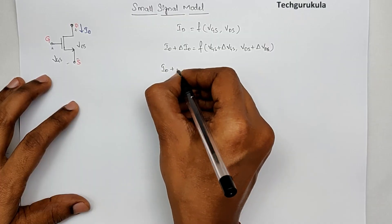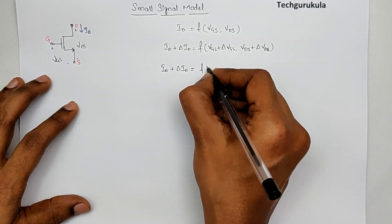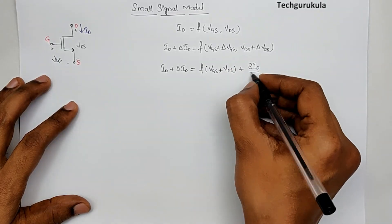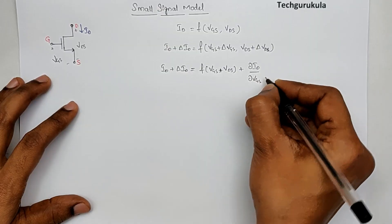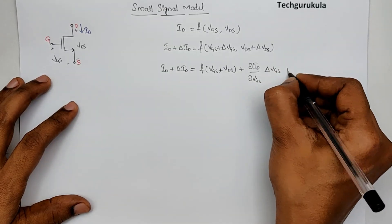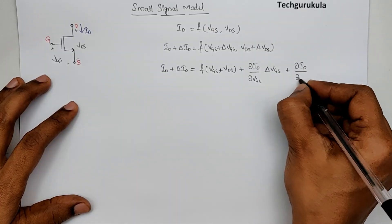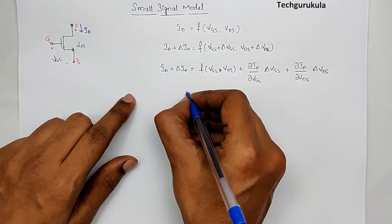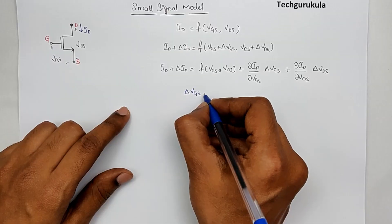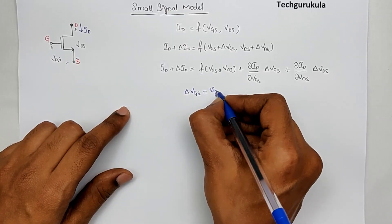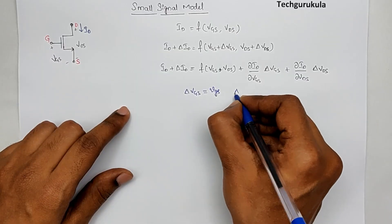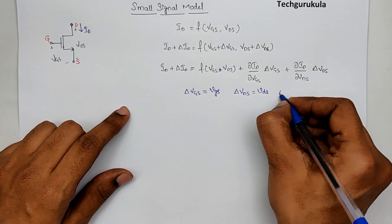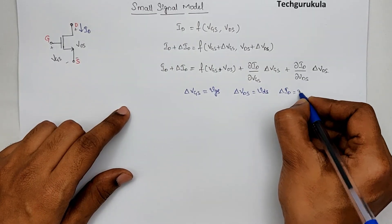We can write: ID plus delta ID equals f(VGS, VDS) plus the partial differentiation of ID with respect to VGS times delta VGS, plus the partial differentiation of ID with respect to VDS times delta VDS. The key here is the assumptions we made: delta VGS is a small VGS, delta VDS is a small VDS, and similarly delta ID is a small ID.